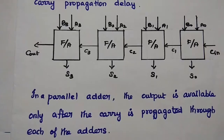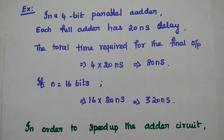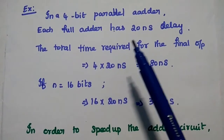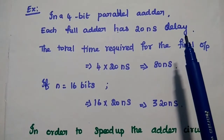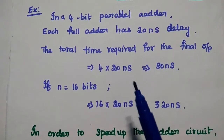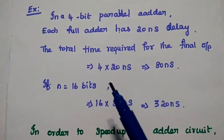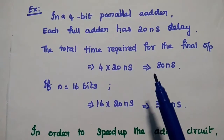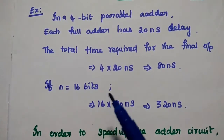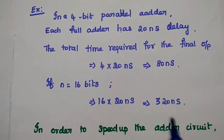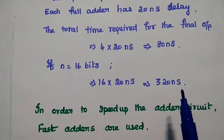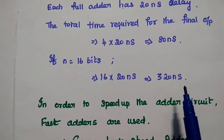That is the major drawback. For example, in a 4-bit parallel adder, each full adder has 20 nanoseconds delay. Then the total time required for the final output is delayed by 4 times 20 nanoseconds, that is 80 nanoseconds. If it is a 16-bit parallel adder, then the delay time is 320 nanoseconds. So this is the propagation delay time.